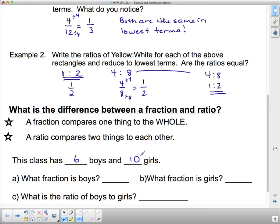So if we have a class that, say, has 6 boys and 10 girls, what fraction is boys? Well, the total, the whole, which we need if we have fractions, the total is 16. So there's 16 altogether. So what fraction is boys? 6 out of 16. And what fraction is girls? 10 out of 16. That's the fraction of girls.